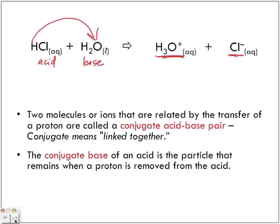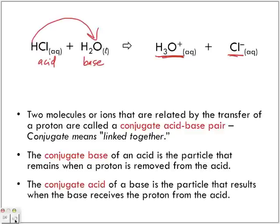So what we have here, we have something called a conjugate base, a new term that we need to know. Of an acid is a particle which remains when a proton is removed from the acid. A conjugate acid of a base is a particle that results when the base receives the proton from the acid.